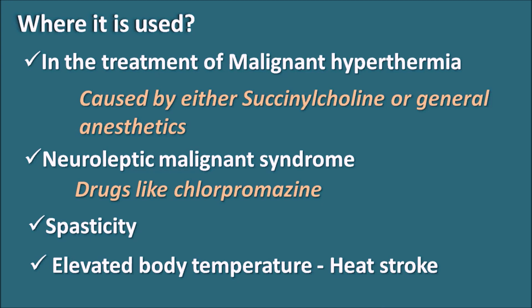In summary, dantrolene is a specific antidote for malignant hyperthermia produced by succinylcholine. It can also treat malignant hyperthermia caused by general anesthetics like halothane, as well as neuroleptic malignant syndrome caused by chlorpromazine, spastic conditions, and heat stroke. Its main action is to block the ryanodine receptors on the sarcoplasmic reticulum, thereby controlling calcium release, preventing skeletal muscle contraction, and controlling the abnormal rise in body temperature.